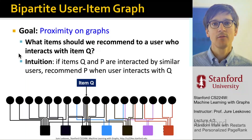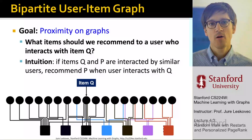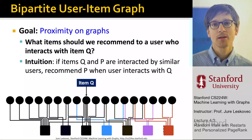What we want to do is somehow measure similarity or proximity on graphs. This is useful because if you are an online store or Netflix, you want to ask yourself what items should I recommend to a user who purchased item Q.